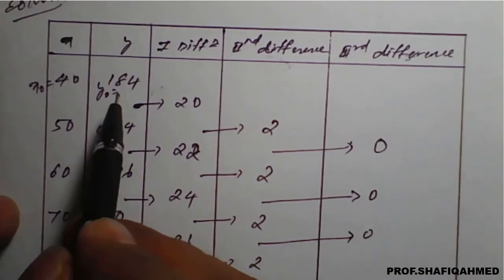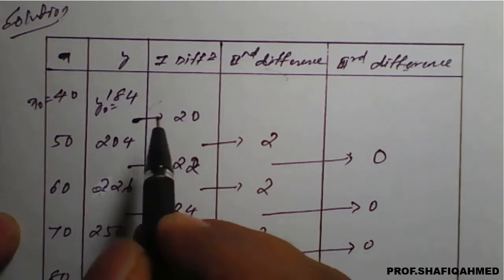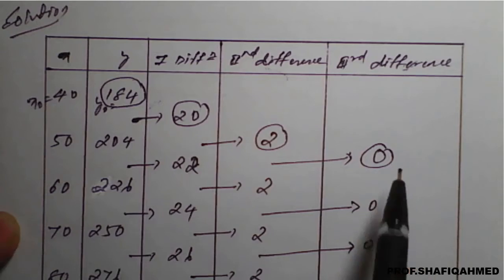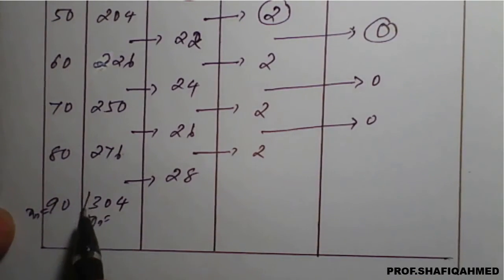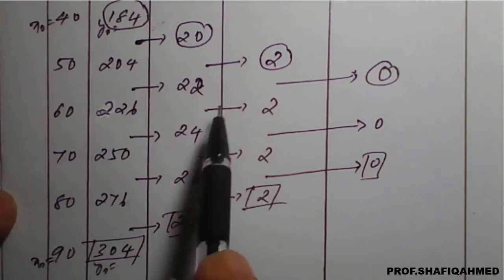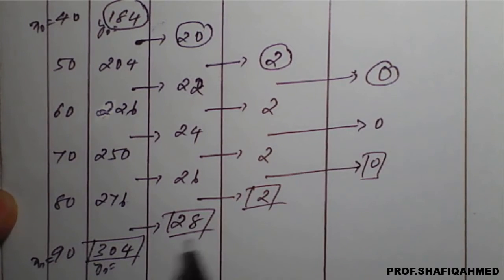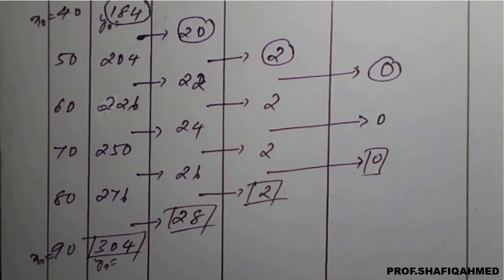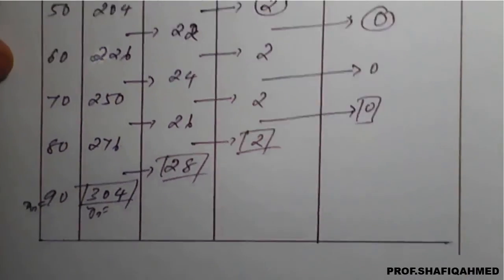The forward values I will take are 184, 20, 2, and 0. These are the forward values read top to bottom. The backward values are read bottom to top from the same common table. We are using forward and backward formulas here because we need to calculate f(38) and f(85).